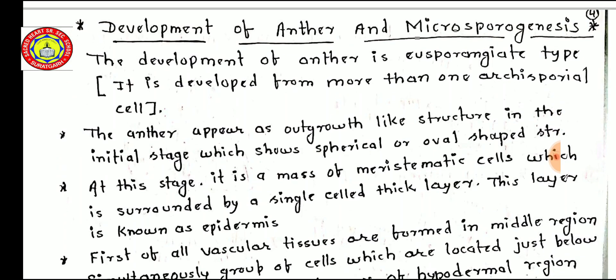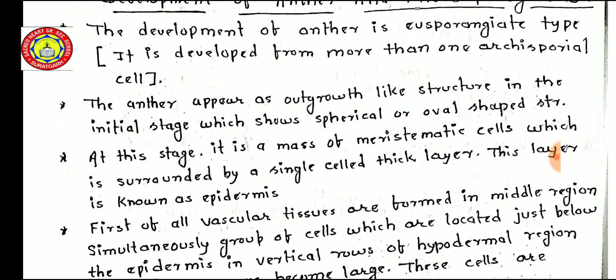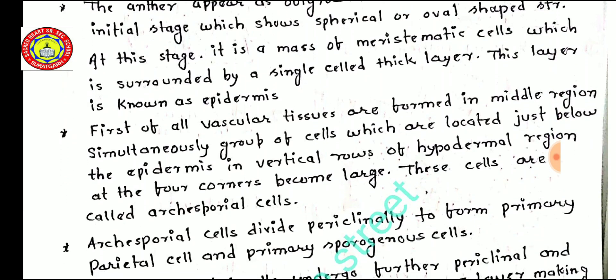The anther appears as an outgrowth-like structure in the initial stage, showing a spherical or oval shape. At this stage, it is a mass of meristematic, dividing cells, surrounded by a single cell thick layer known as the epidermis. First, all vascular tissues are formed in the middle region. Simultaneously, groups of cells located just below the epidermis in vertical rows of the hypodermal region at the four corners become large. These cells are called archesporial cells.